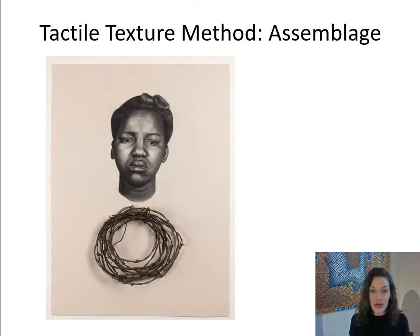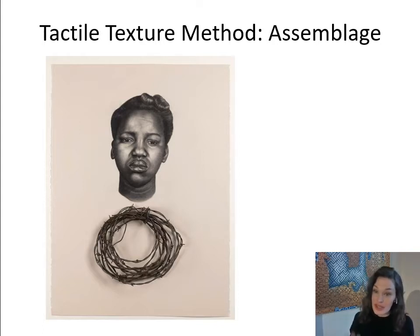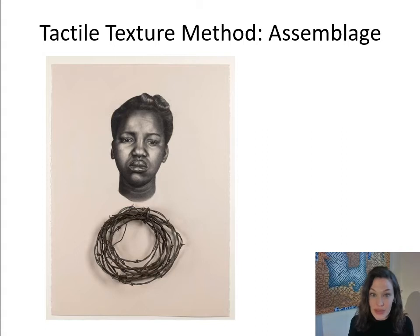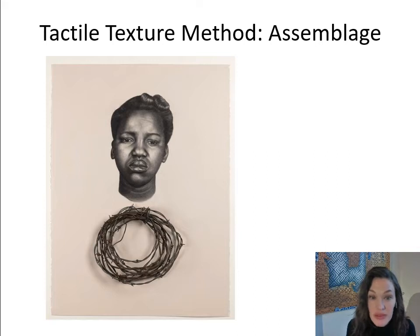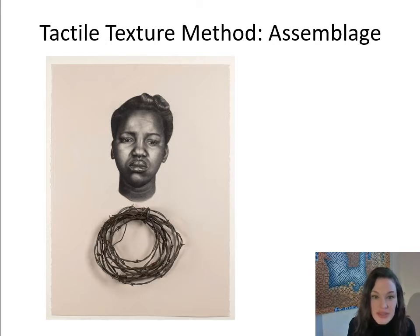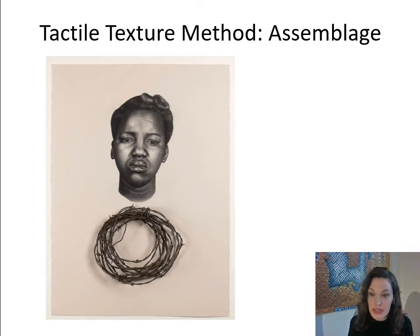A more extreme version of collage is assemblage. Assemblage is where an artist, instead of taking something two-dimensional and applying it to something two-dimensional like in collage, actually takes a three-dimensional object and applies it to a two-dimensional surface. This is a piece by Whitfield Lavell — he drew with graphite pencil the face of the woman, and applied the barbed wire, probably sewn in from the back. This is a combination of sculpture and drawing, and we call this assemblage.